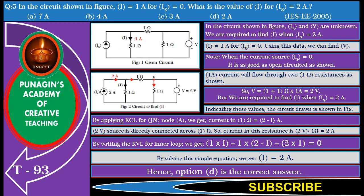So let us open it as shown. Now, we find that 1 ampere current will flow through the two 1 ohm resistances as shown. So V equals 1 plus 1 ohm into 1 ampere, equal to 2 volts.